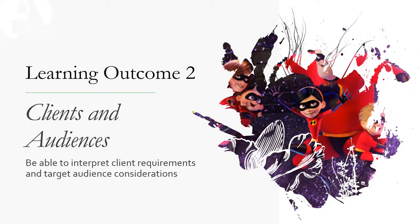Learning Outcome 2 is all about clients and audiences. The basic part of the exam is to read through the client brief, be able to pick out the important details, think about who your target audience is going to be, and what kind of steps you would take to make sure that the product is suitable for them.